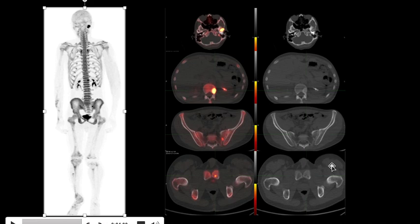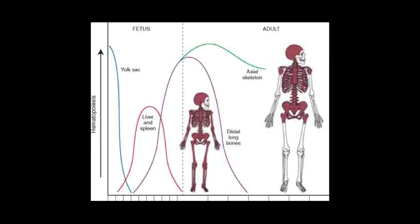Bone mets go to active bone marrow and the appearance of active bone marrow changes with age. Here is a diagram showing the evolution of active marrow from a child to an adult. In the fetal stage it's a yolk sac which is involved in hematopoiesis, and soon after that it's the liver and spleen that take up that function, followed by the axial and appendicular skeleton. Compare this to the adult where active hematopoiesis is only in the axial skeleton and not in the appendicular skeleton.